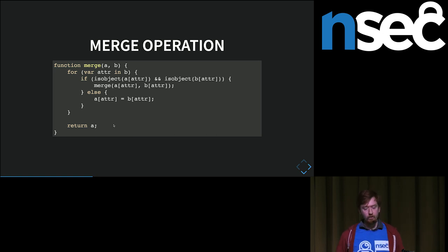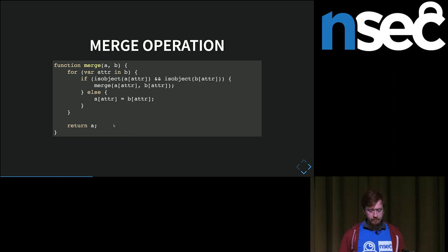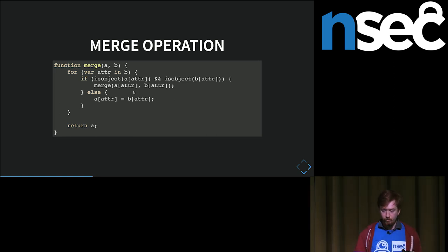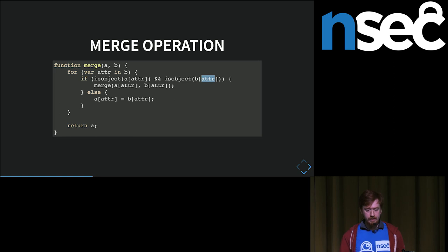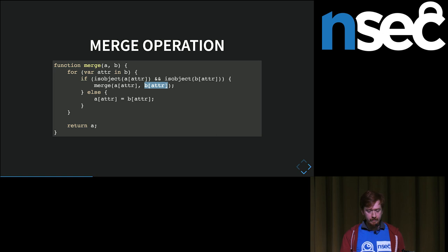The way vulnerable merge operations were implemented works like this: they start by iterating all properties on the second object. If a property exists on both objects and they are both of type object, it recursively merges them. But where it gets really interesting is if the attribute's value is named __proto__. This value always exists on Object and is also of type object, which means if we can control what's defined inside the proto property on the second side, this value is going to point to the prototype of Object.